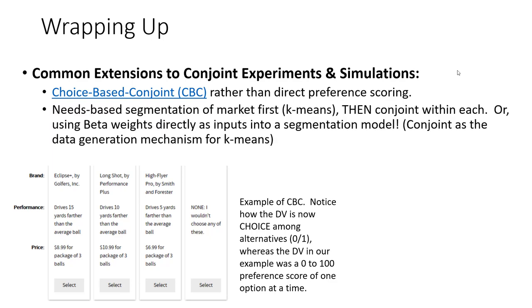Another common extension to conjoint analysis is the use of market segmentation, and this can go in both directions. Sometimes marketers first perform needs-based segmentation of the market, such as K-means, and then within each identified segment they conduct a conjoint analysis. This is useful because each needs-based group should be similar in their preference evaluations within segments but different across segments. Alternatively, conjoint analysis results can be directly used as inputs into a segmentation model.